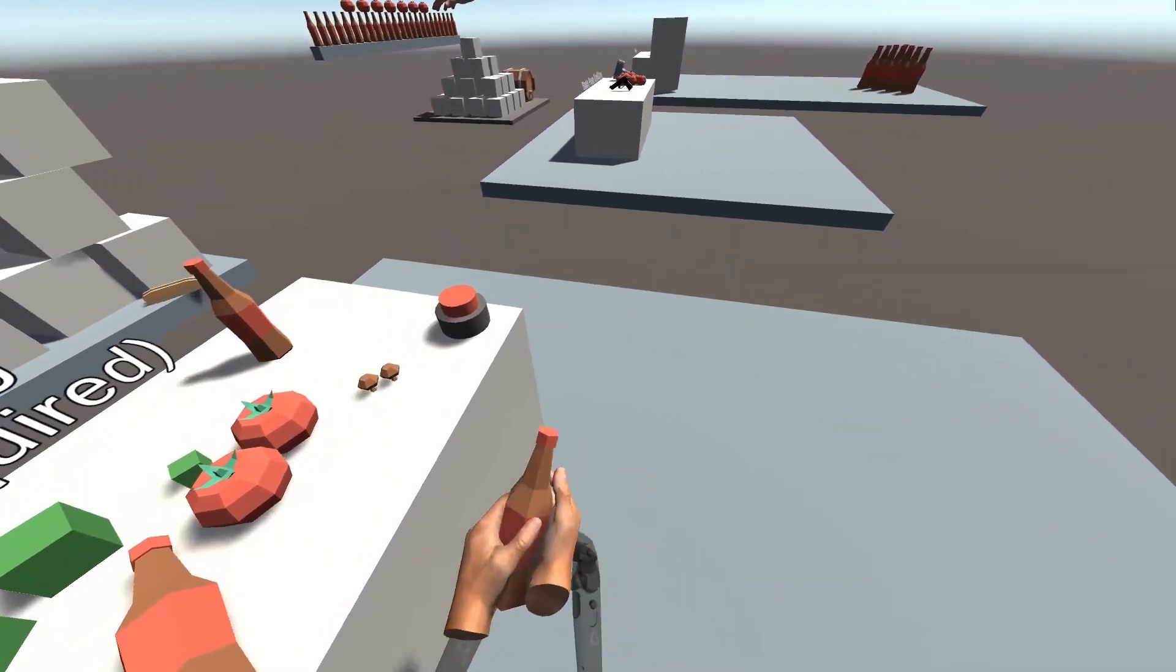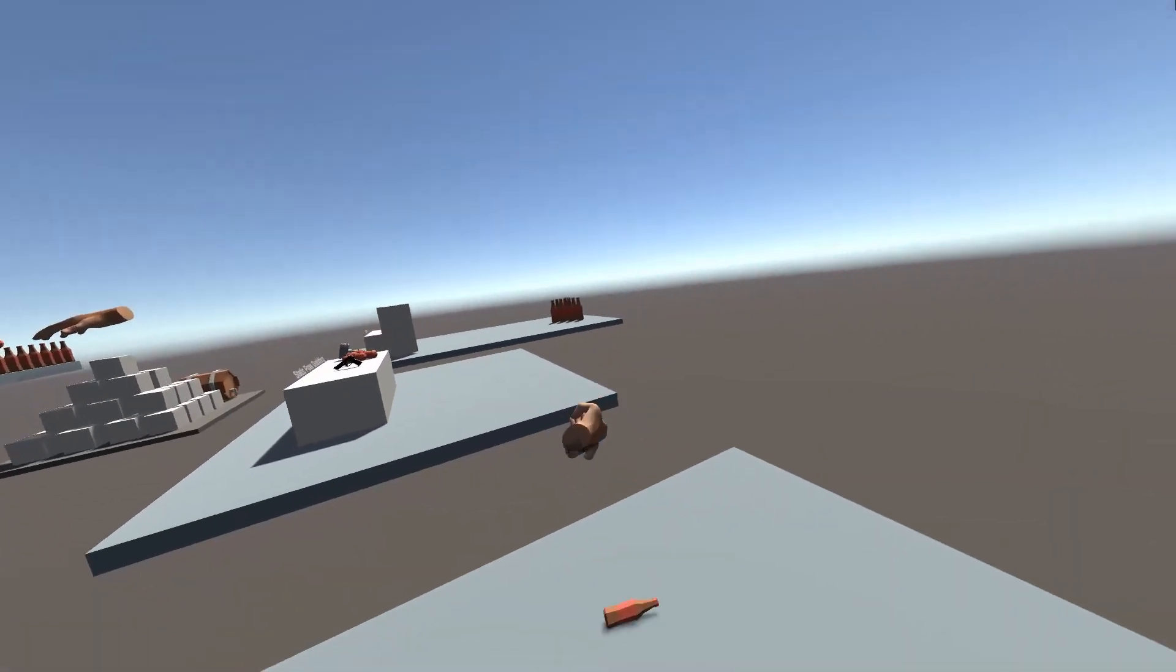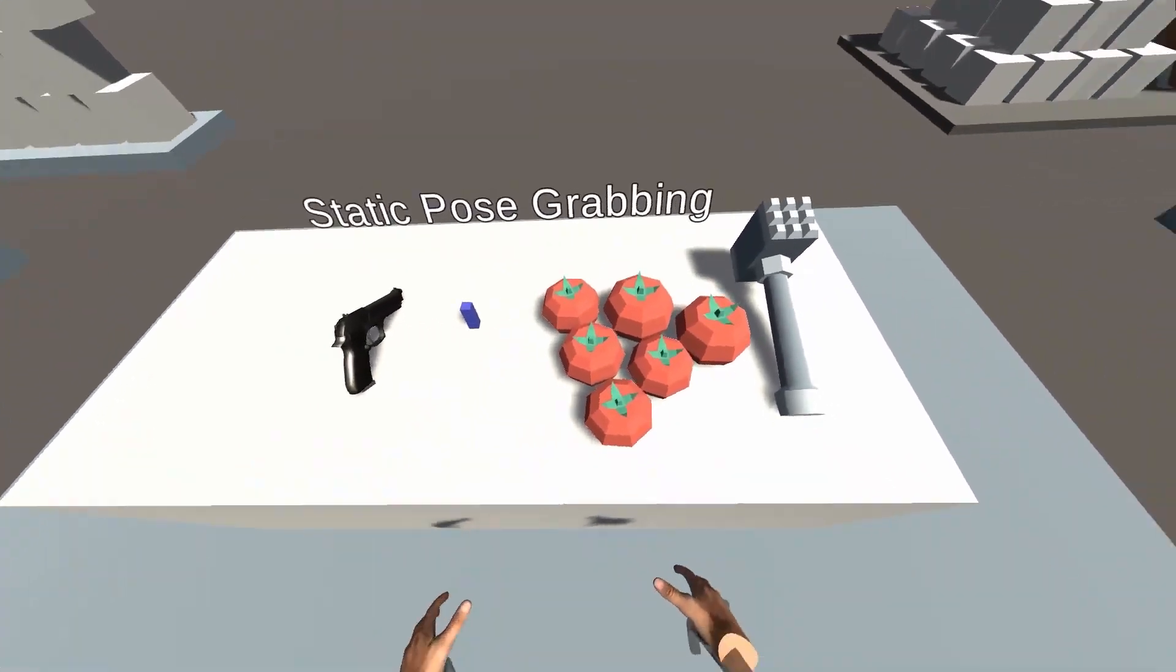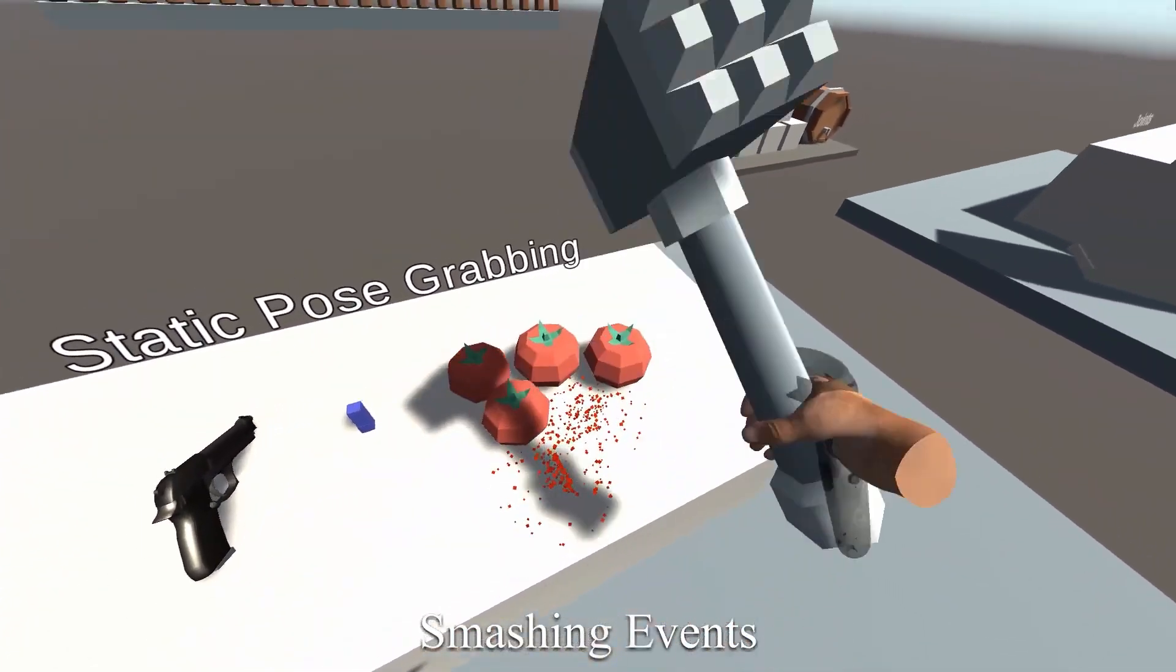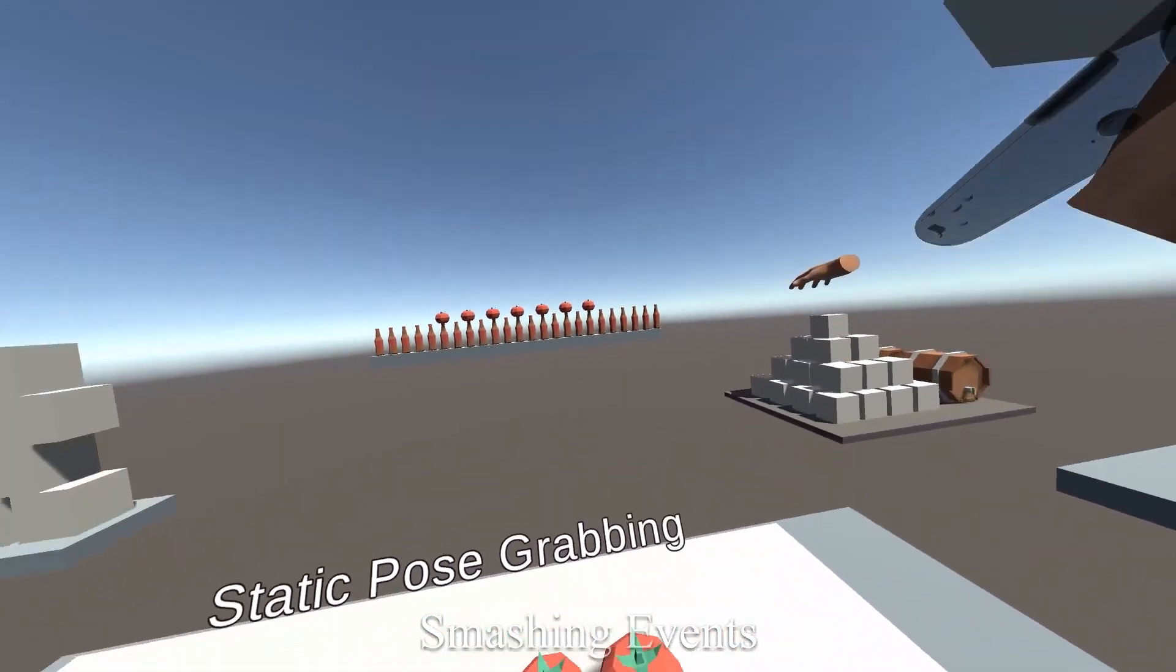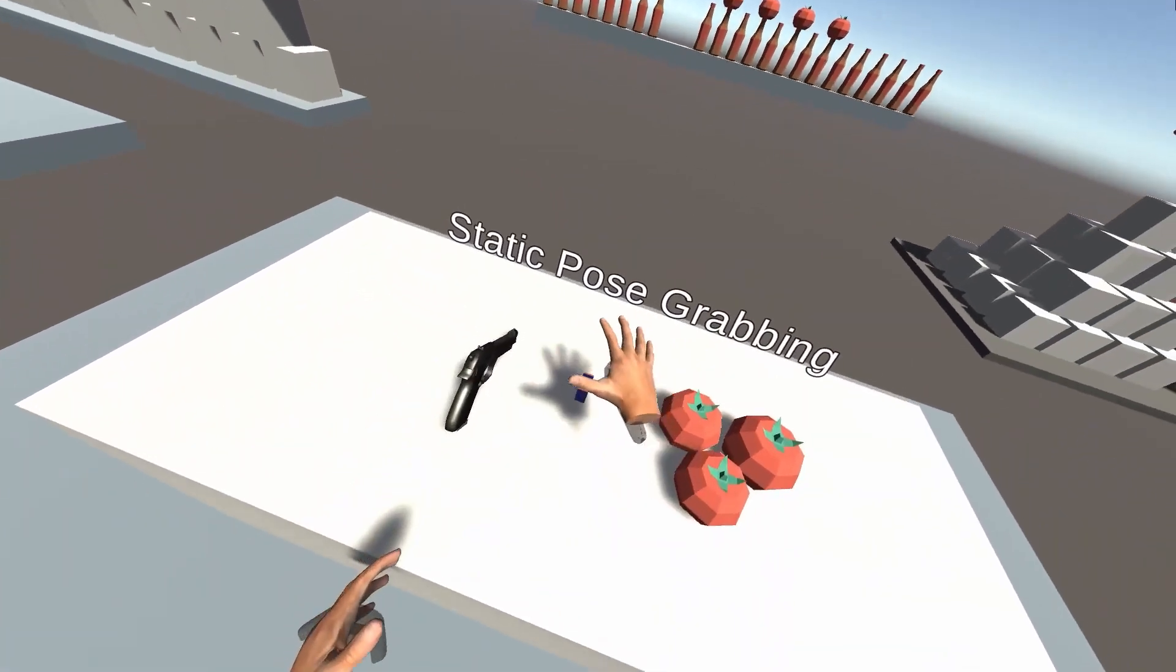So if you pick up something heavy, your hand will slide off of it or break. And sometimes you need two hands to pick up stuff—all of that calculation and integration is a part of this asset. It's really nice. There's buttons, levers, doors, all that kind of stuff. But also, the main appeal of this asset is the procedural fingers. So anything you grab, it will automatically track where the fingers need to go on that object when you pick it up. And that is so cool and so nice.